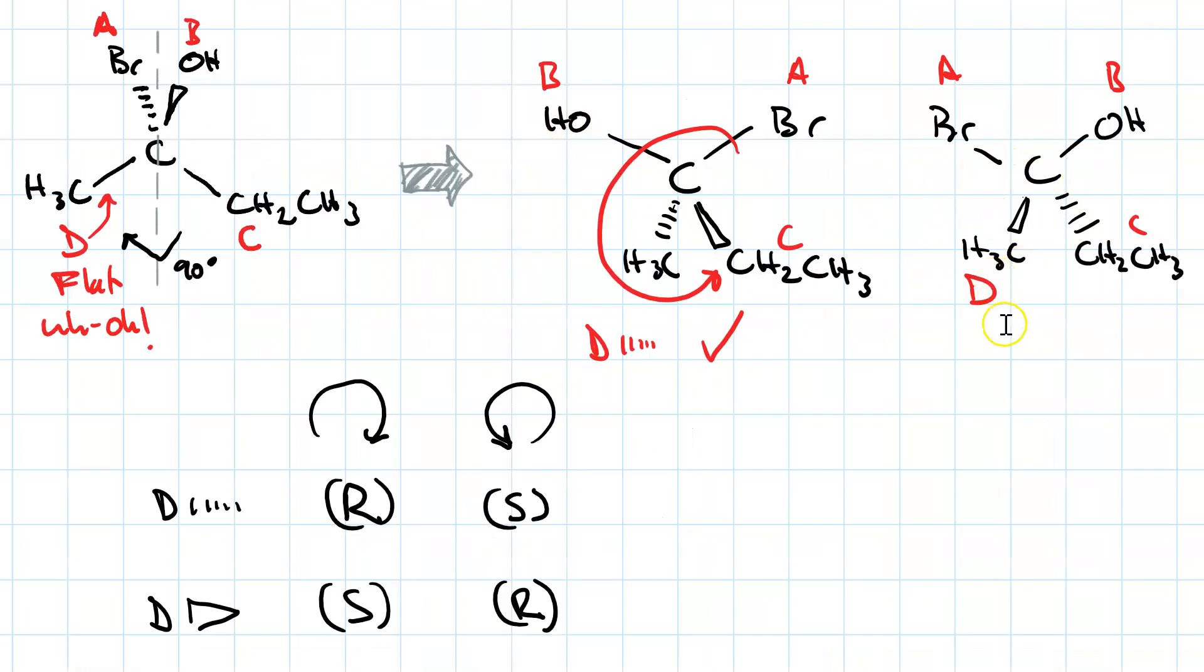Now look over here. This is the original molecule, but rotated 90 degrees in the opposite direction from this one. So it's the 180 degree image of this one. And so, my curved arrow goes ABC like that. That's clockwise. And my lowest priority group is on a wedge, so again, it's S. Right? Whereas here, we had counterclockwise with the lowest priority group on a dash, so S.